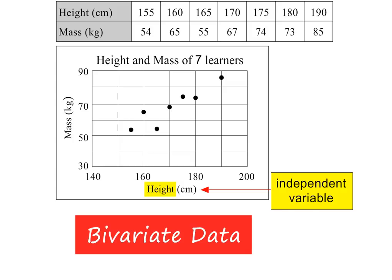Height, the variable shown on the horizontal axis, is called the independent variable. In mathematics, we call this axis the x-axis.